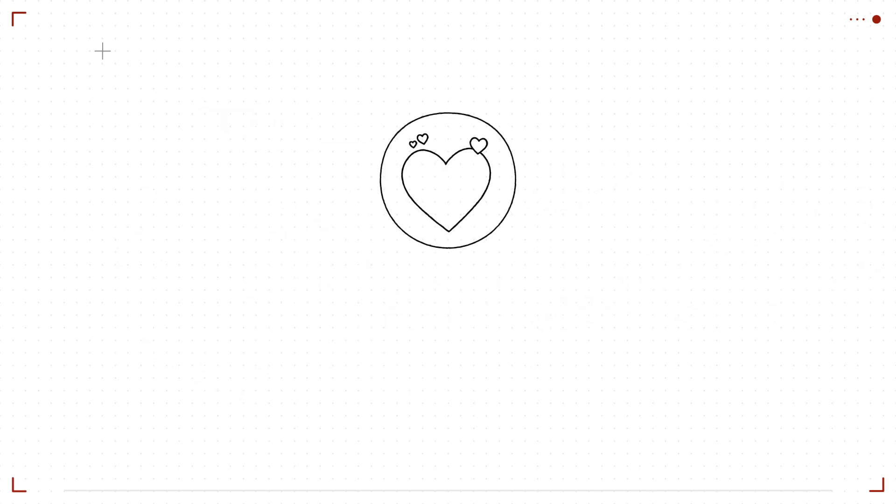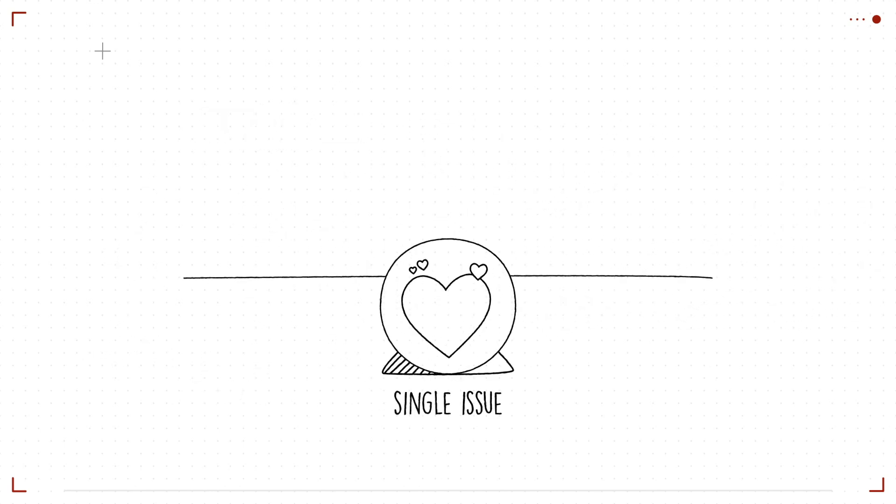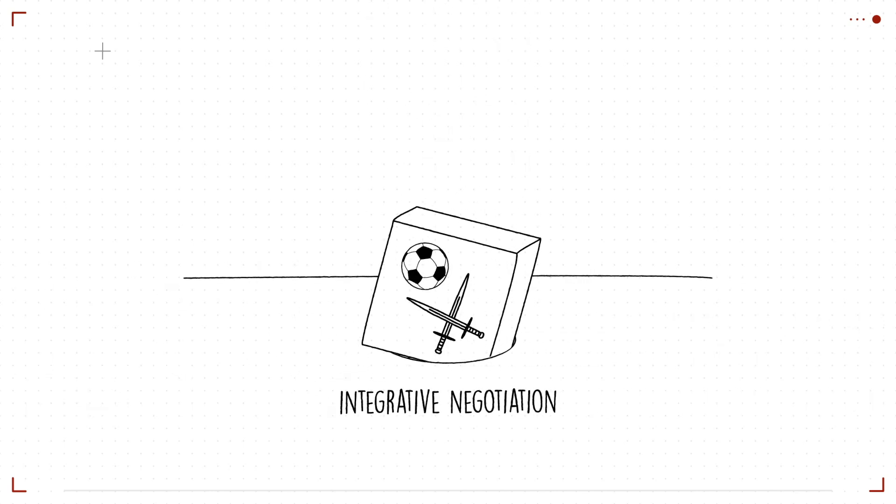But a lot of time our metaphors are not well matched to the situation. A relationship metaphor, for example, is not well matched to a distributive single issue task. On the other hand, a game or battle metaphor is not well matched to an integrative negotiation. Think more clearly about your metaphors and you'll be a better negotiator.